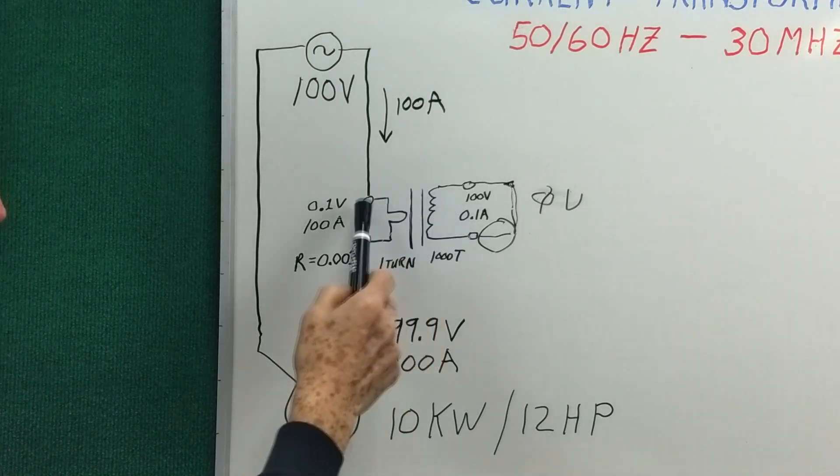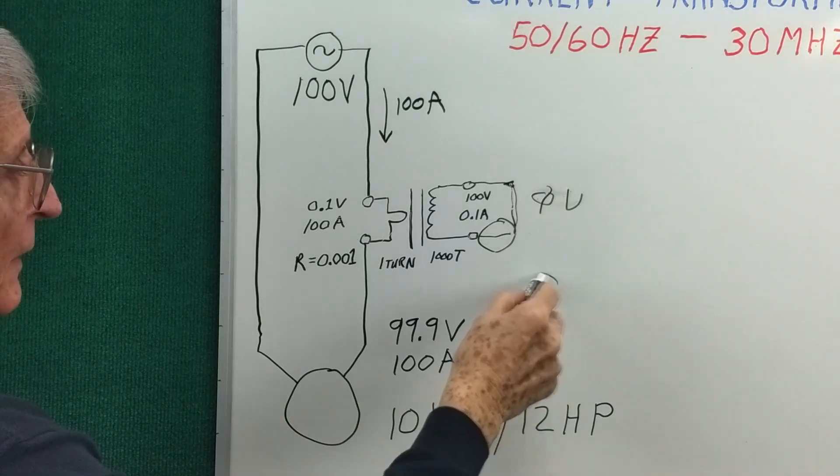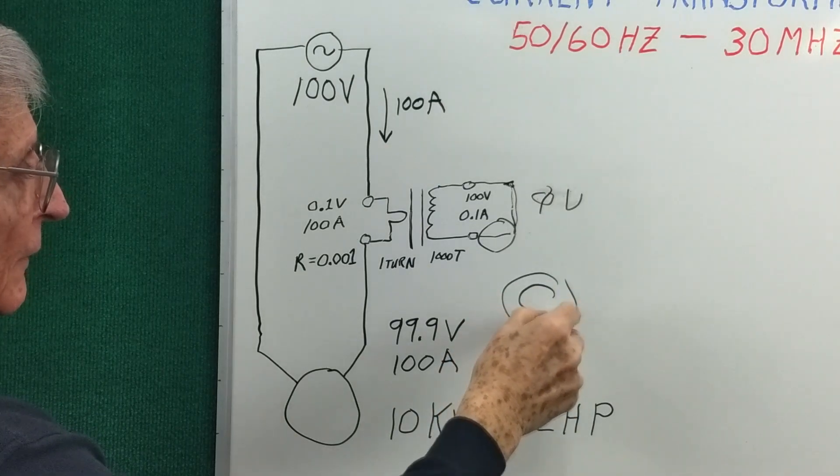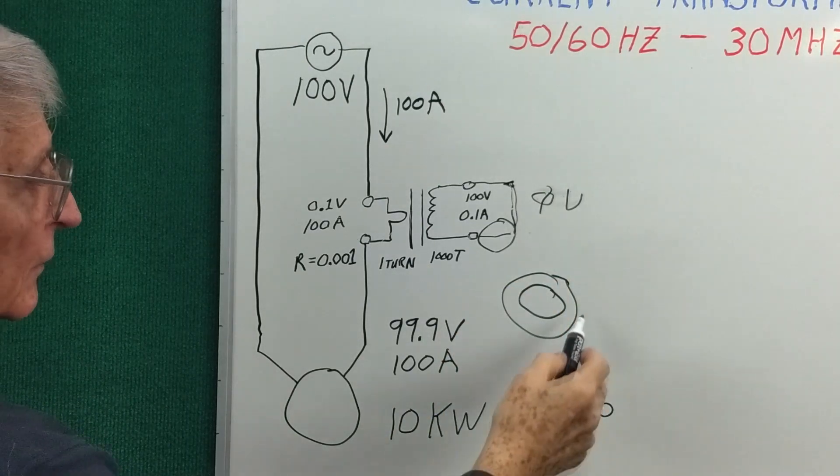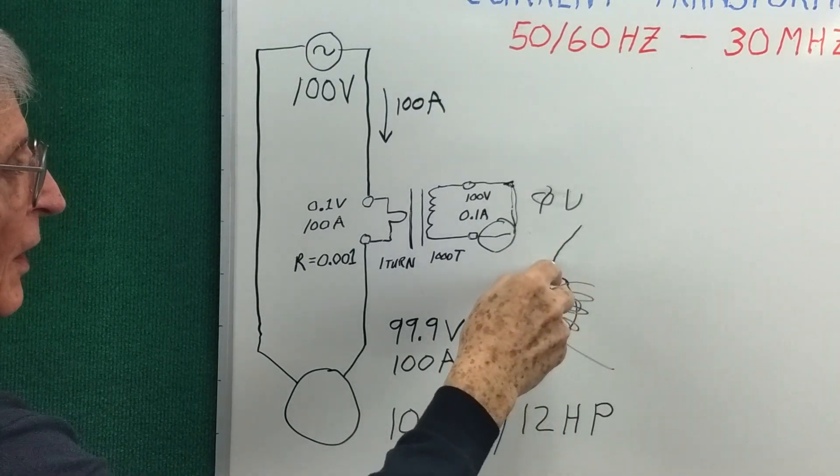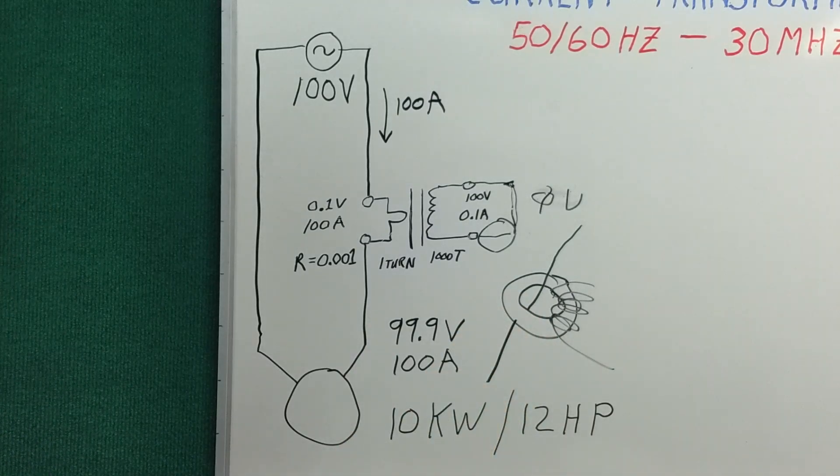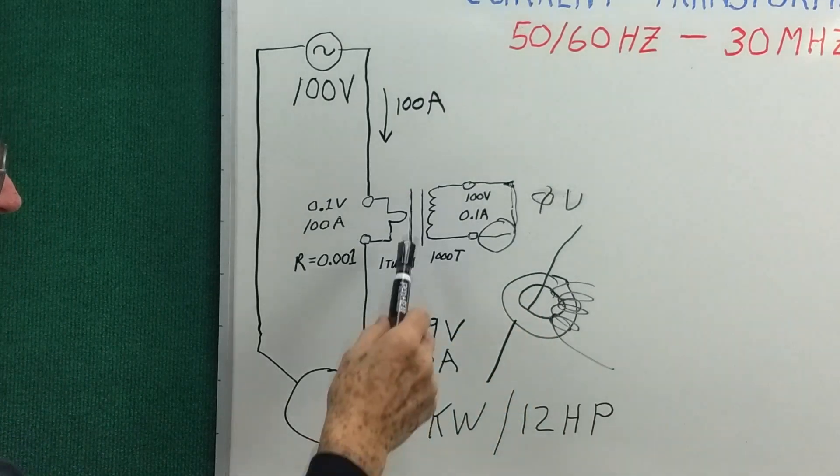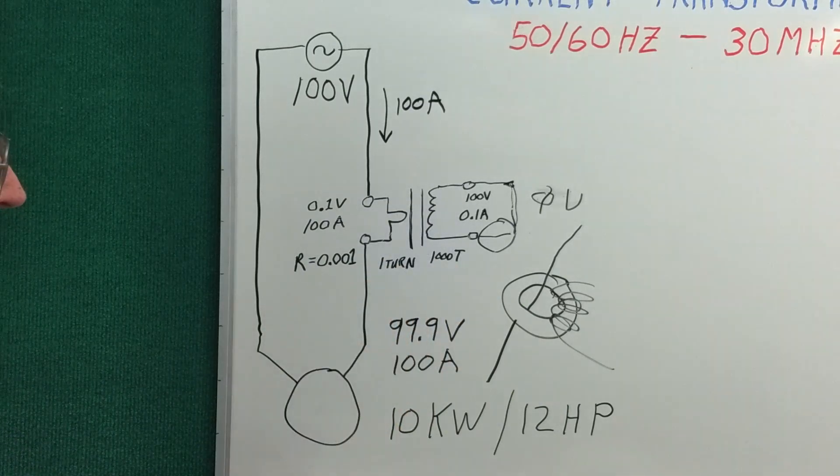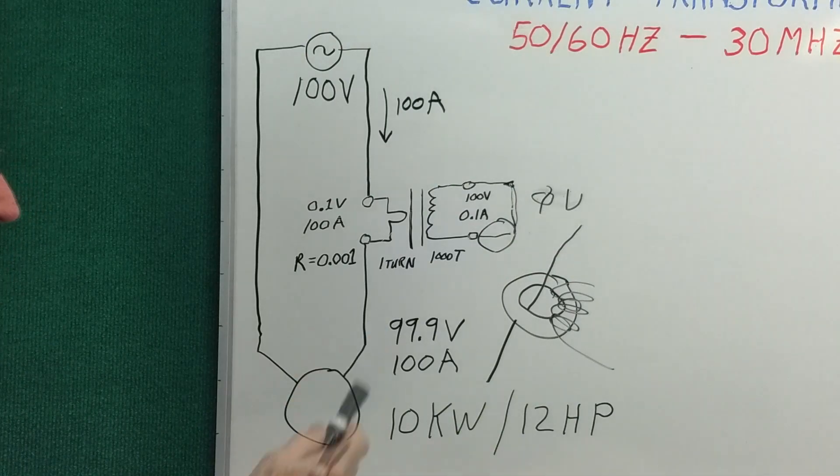So this is how a current transformer is used. It's just an ordinary transformer. Sometimes they're made from a toroid, and that's for convenience. We have our secondary winding and our primary winding. It's just a single wire going through it. So next let's take a little standard transformer and make it into a current transformer.